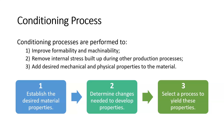The conditioning process itself has three steps. First, we establish the desired material properties — what does the final part need in terms of physical properties? What kind of environment will it work in? What forces and thermal environments will it be exposed to? What happens if it fails? Then step two: we determine the changes needed to develop that property — there's a kind of recipe for achieving improved ductility, for example. And step three: we select the process to yield those properties.